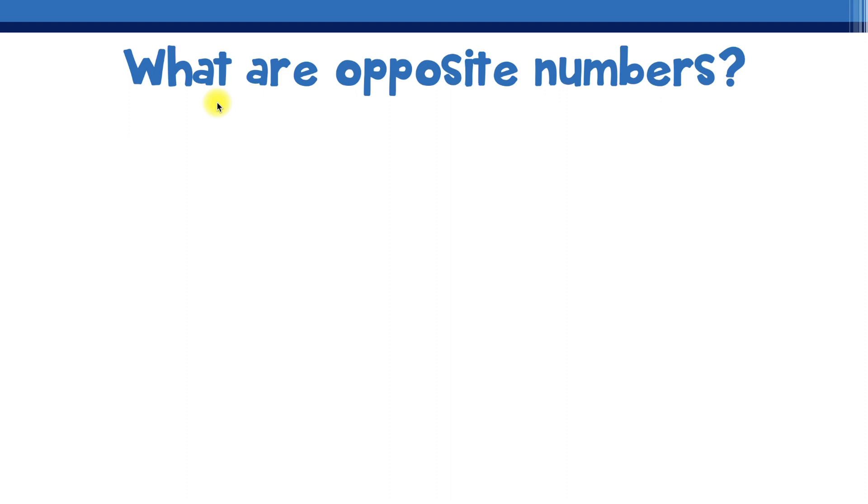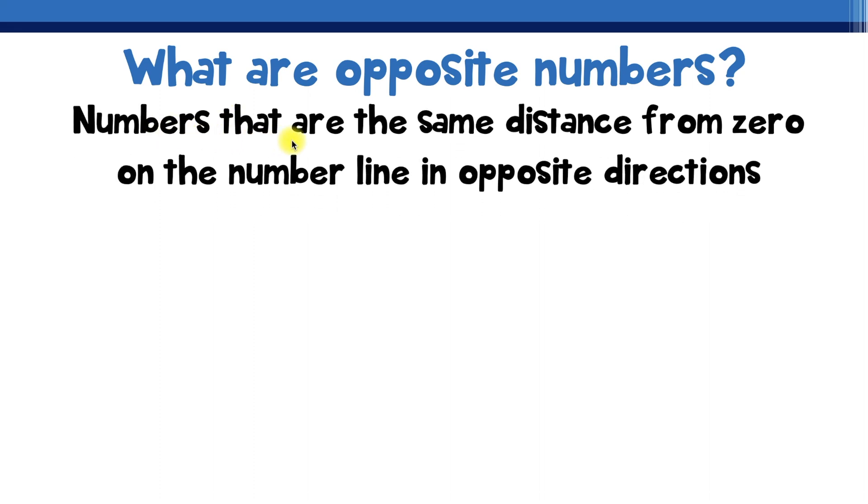So what exactly are opposite numbers? Well, opposite numbers are numbers that are the same distance from zero on the number line but they're in opposite directions.